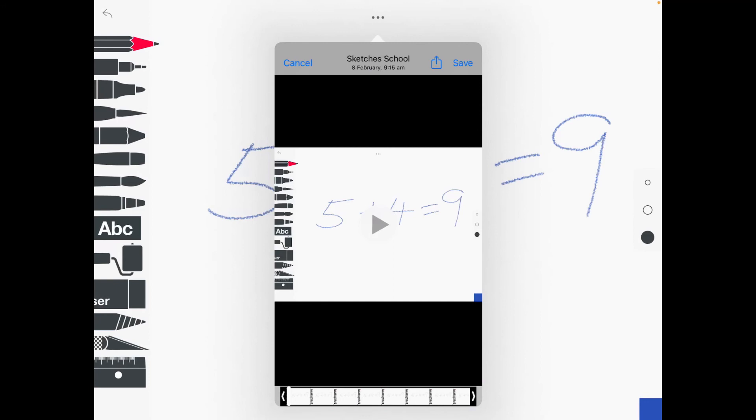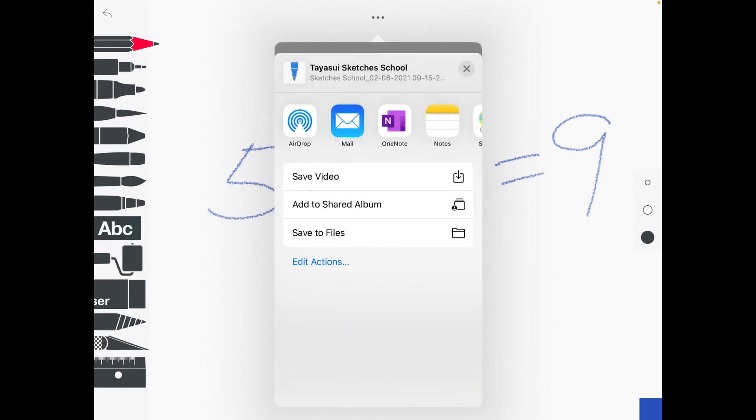The other great feature is that if you select the share button, which is the box with the arrow pointing out at the top, you then have the ability to share that information to apps like OneNote and also to Seesaw. We'll see you next time.